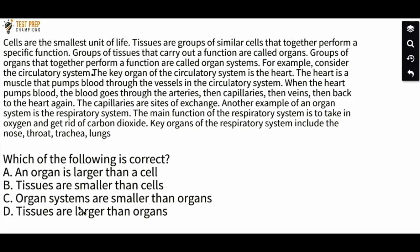Which of the following is correct? A. An organ is larger than a cell. B. Tissues are smaller than cells. C. Organ systems are smaller than organs. Or D. Tissues are larger than organs.